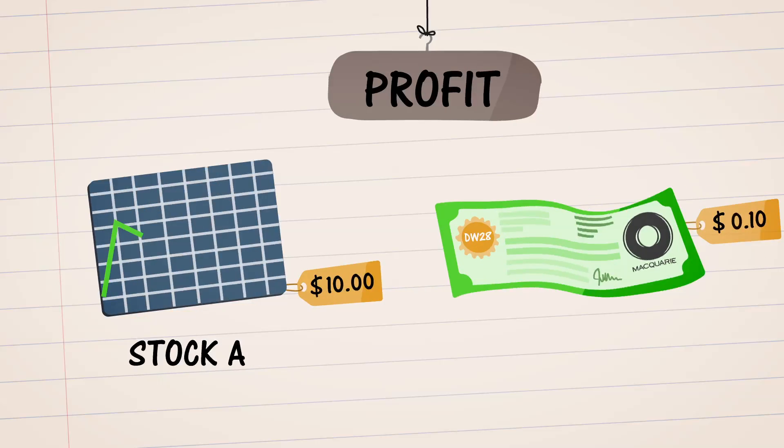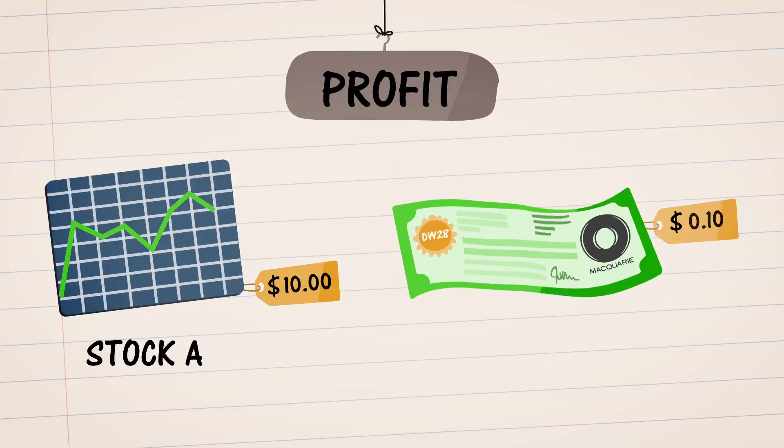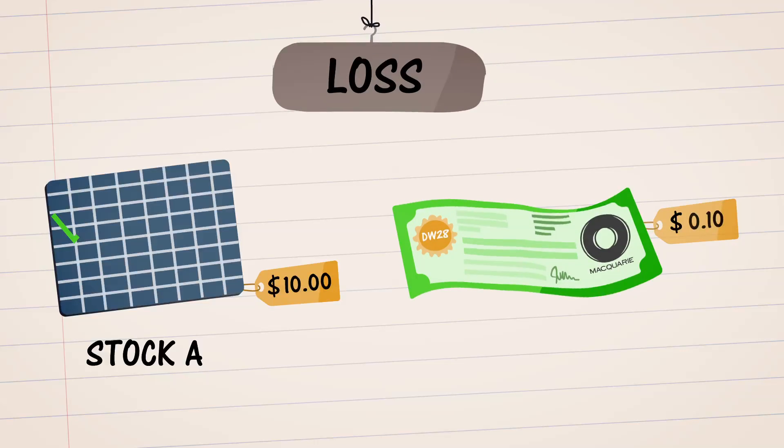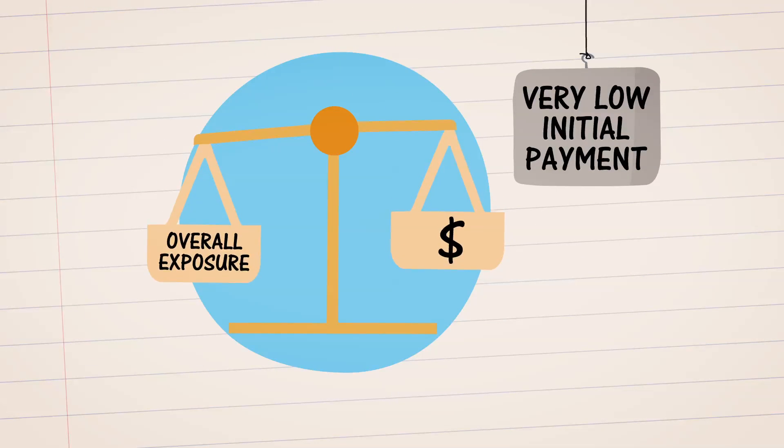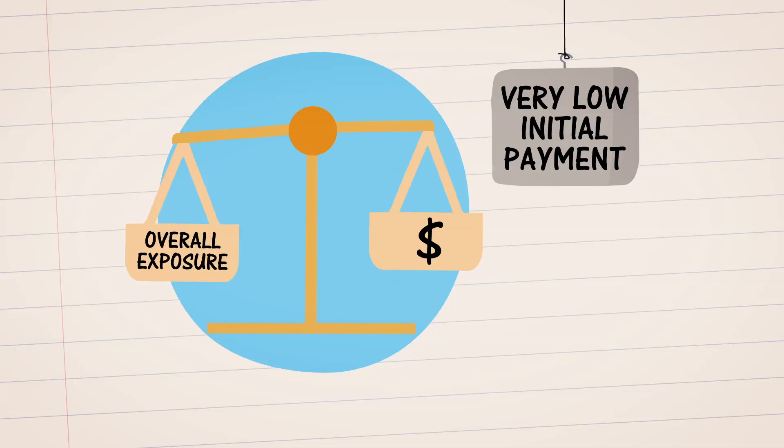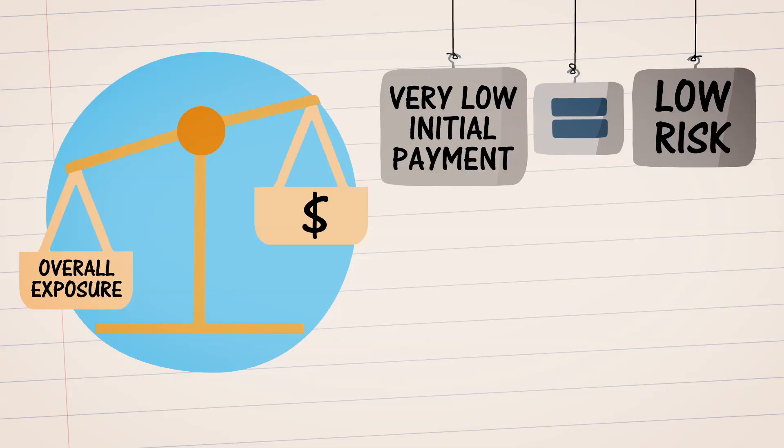However, just like you can experience higher percentage returns with DW if the underlying stock goes up, you can also experience higher percentage losses if the stock goes down. The good thing is your initial payment is very low, which means you can increase your overall exposure while risking a relatively low amount of capital.